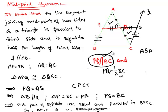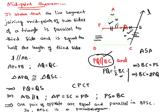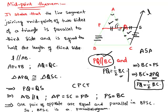So PSBC is a parallelogram. In a parallelogram, BC is parallel to PS, which means BC is parallel to PQ. Here we prove the first condition — PQ is parallel to BC. The length of the segment PS is equal to BC since they are opposite sides of the parallelogram. And here we get BC is equal to 2 times PQ, because the two triangles are congruent and the corresponding part of PQ is QS. Therefore PQ is equal to half of BC. So the midpoint theorem states: the line segment joining midpoints of two sides of a triangle is parallel to the third side and equal to half its length.